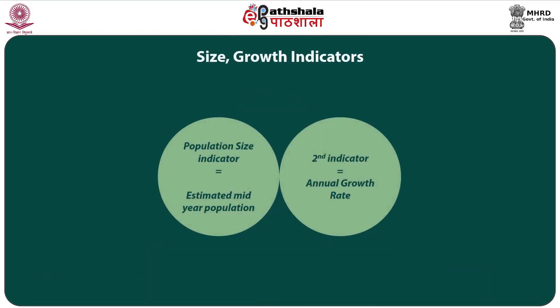Let us now move to the specific definitions of various indicators related to population policy. There are some indicators related to population size and population growth. The indicator for population size is the estimated mid-year population, indicated in thousands according to the latest year, using the medium variant of official UN population estimates. The second indicator is the annual growth rate — the average exponential rate of growth of population over a given period, expressed as a percentage.